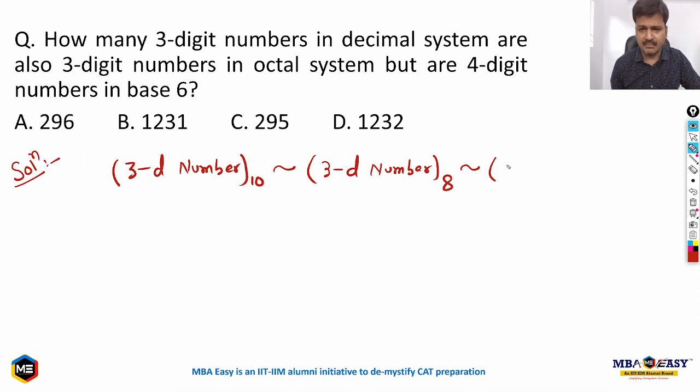So we have to find the number of 3-digit numbers in decimal system which when converted to base 8 also remain 3-digit numbers, but when converted into base 6 become 4-digit numbers. We already know the method behind it, so we can straight away find the answer.